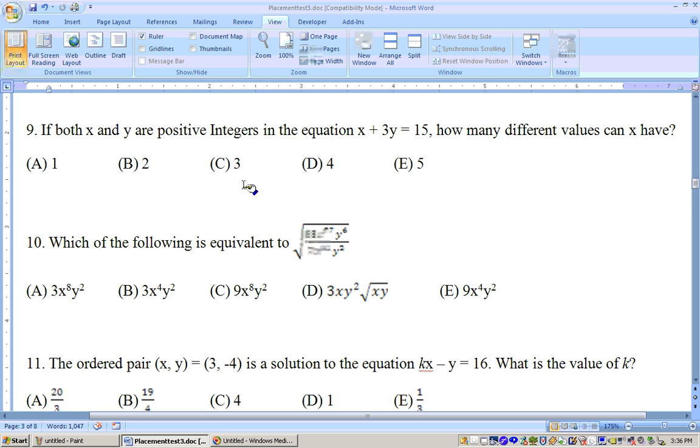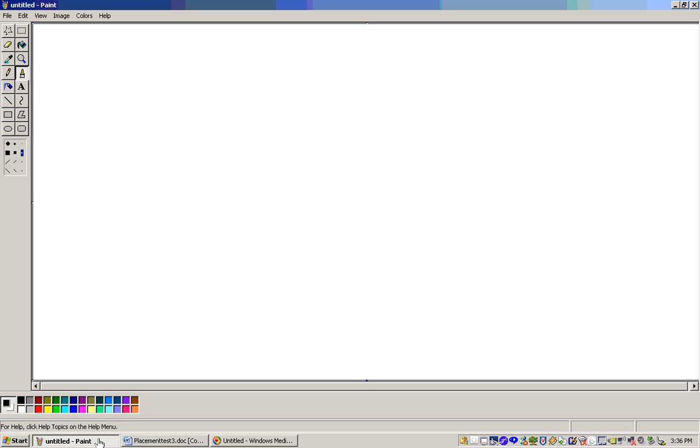How many different values can x have? Let's take a look at this. Our equation is x plus 3y equals 15. These have to have positive values, and it's saying how many different values can x be that this has a solution.